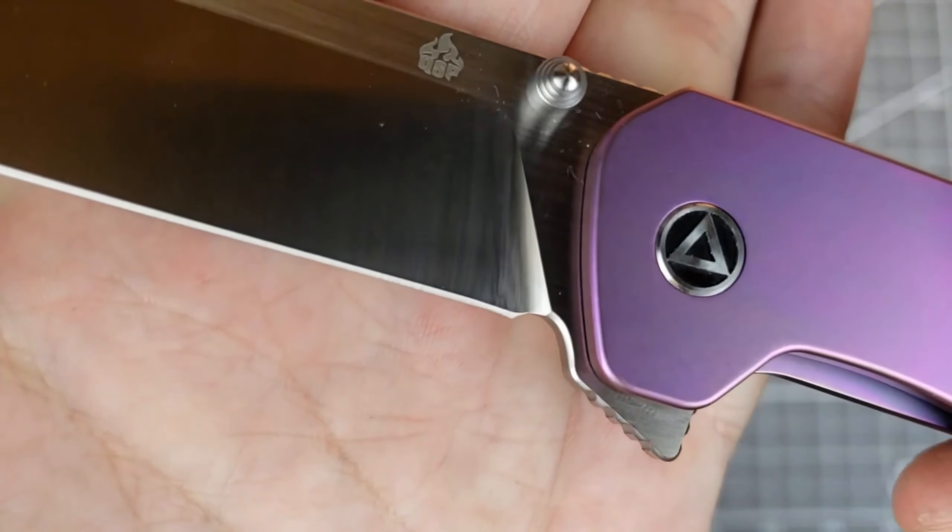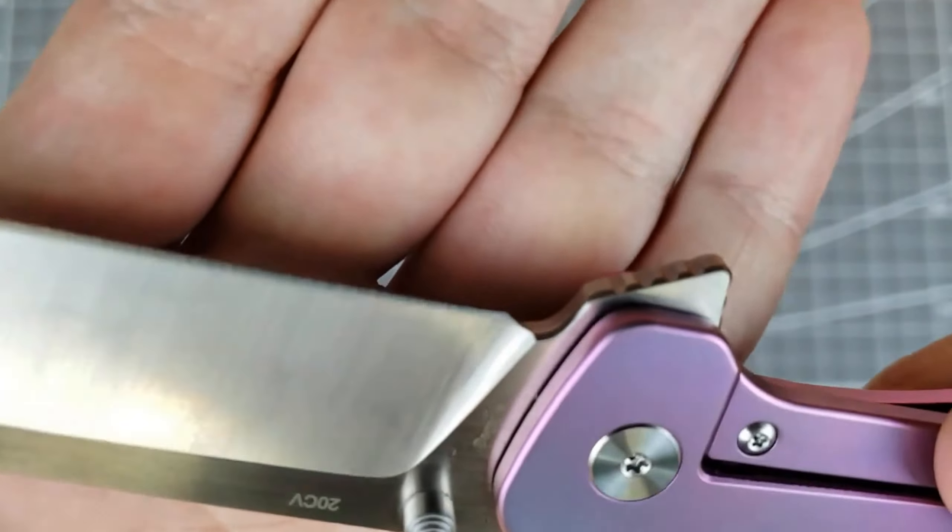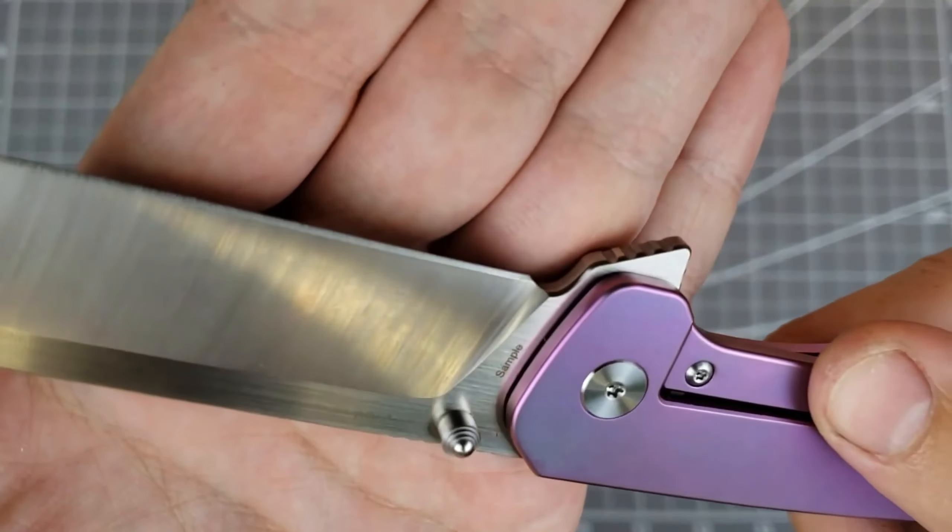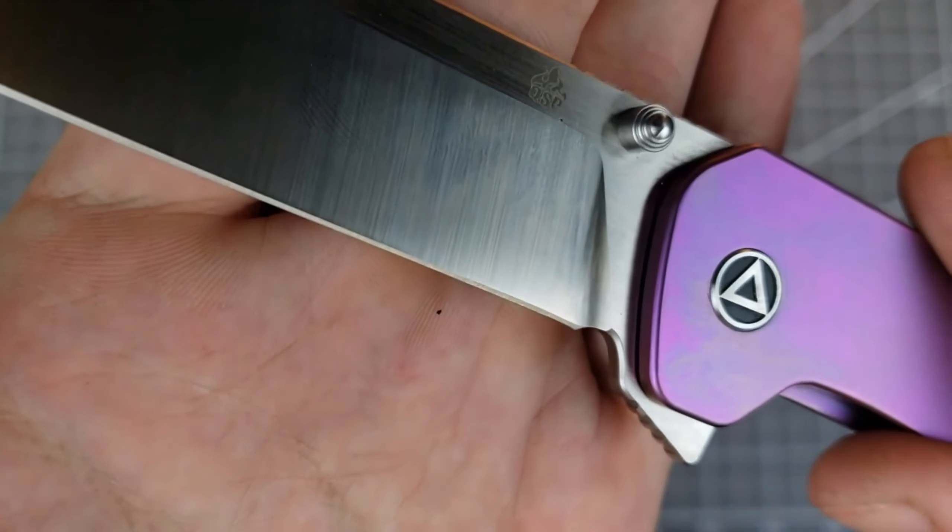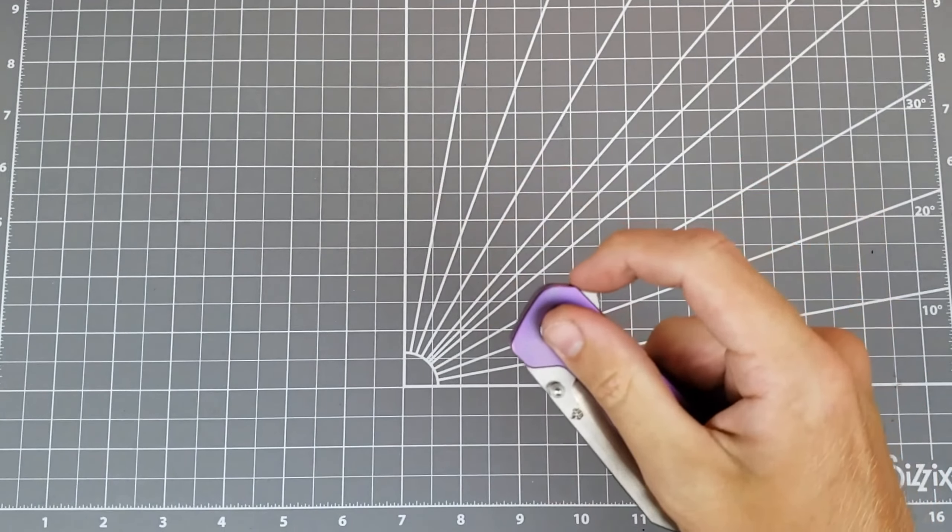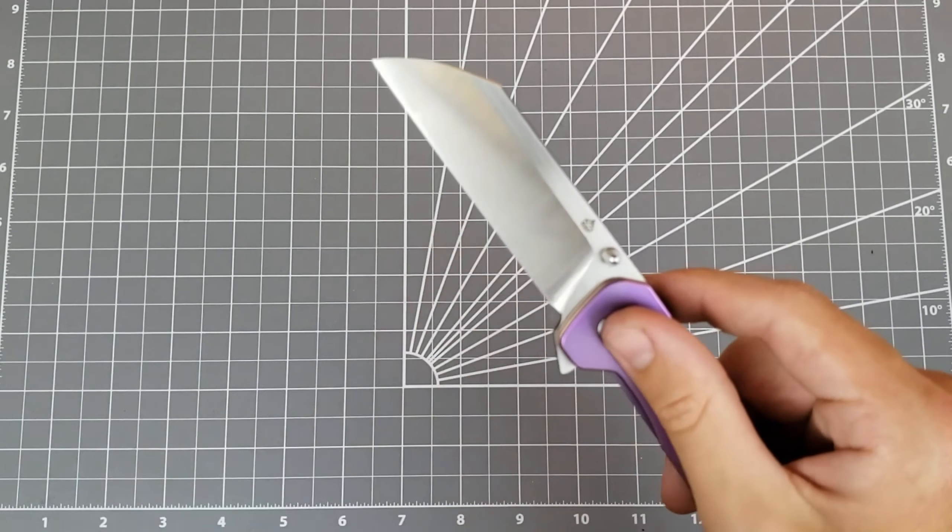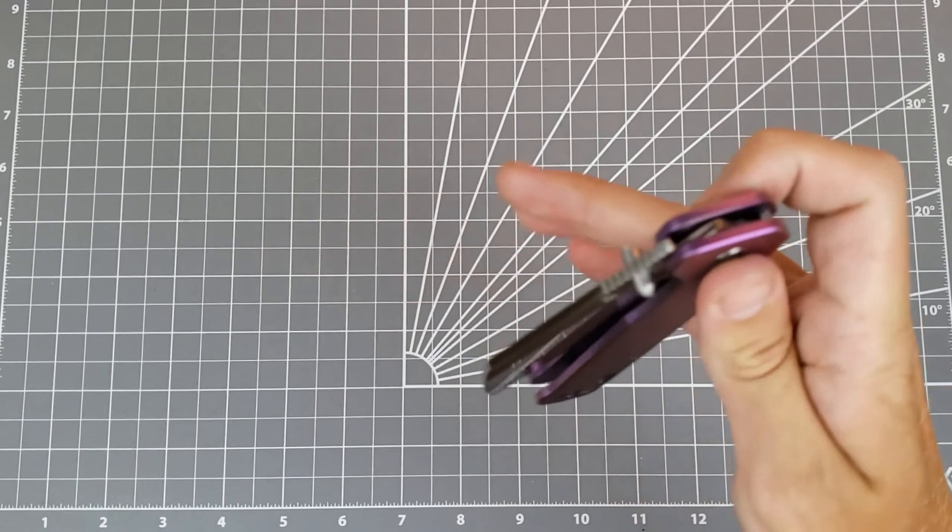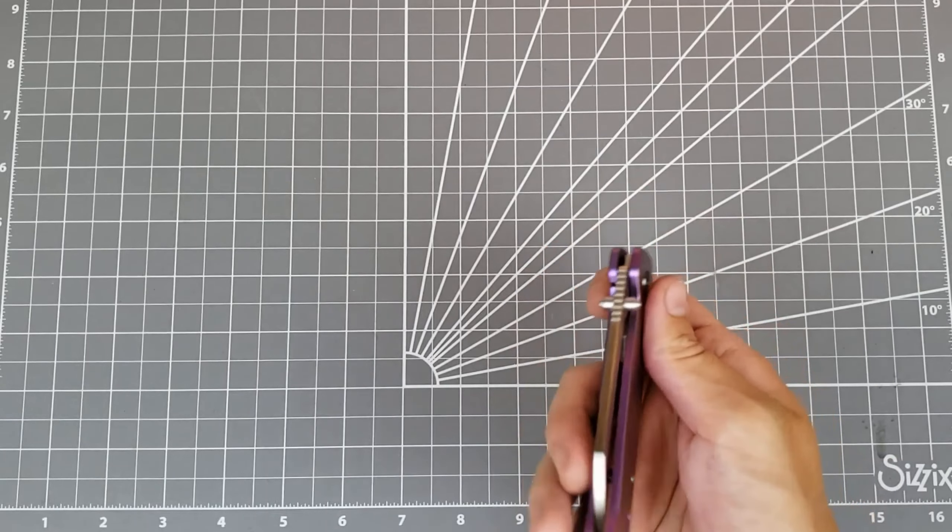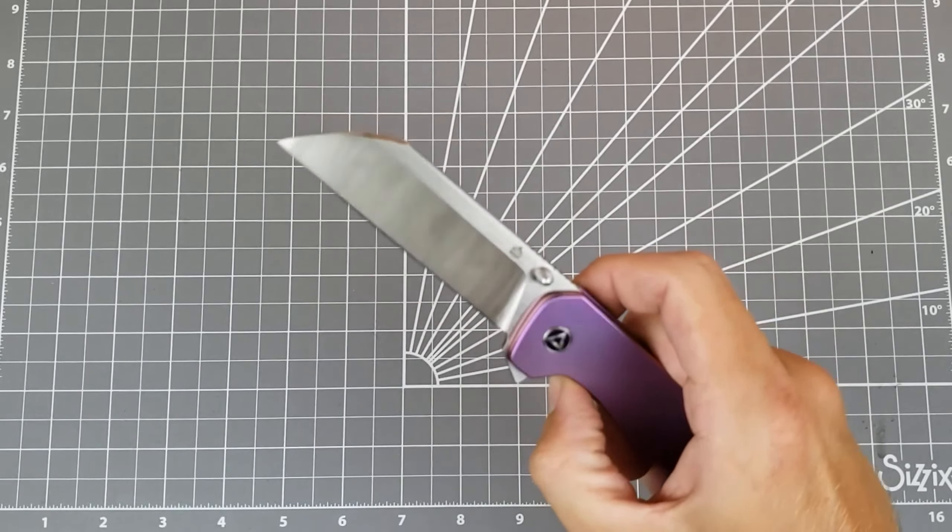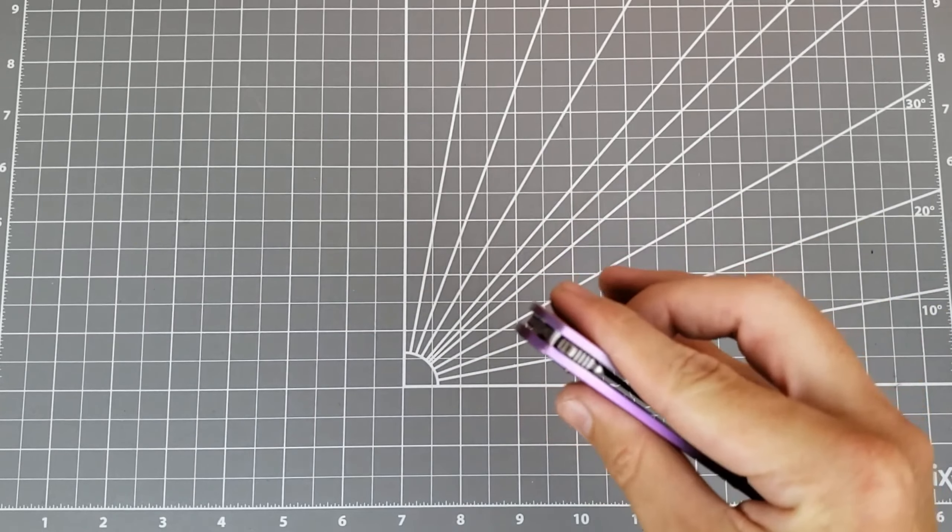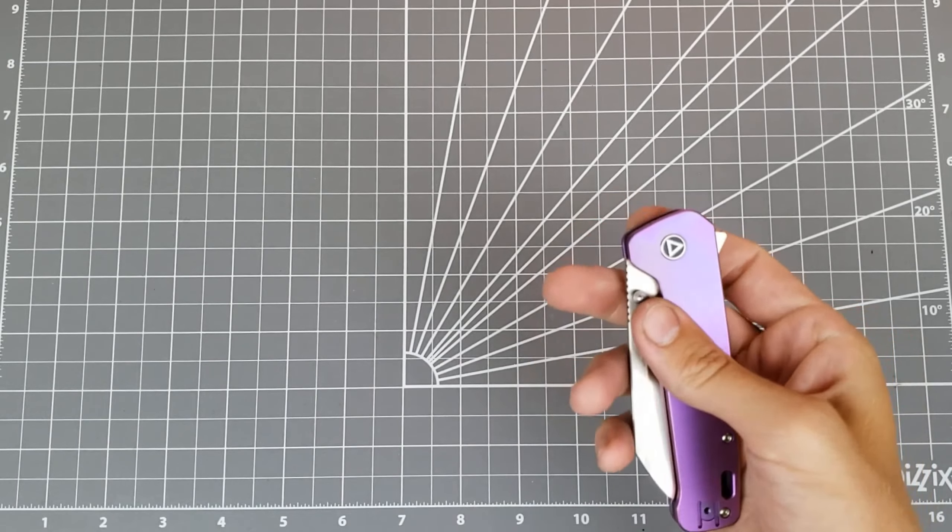Another thing I don't like is this sharpening choil, just like the regular penguin is too small. You can see how it does not clear the plunge grind. So even on this factory edge, you have some recurve in it. That's definitely annoying. Really wish they would just take that back and out another eighth of an inch each direction. That's what I did on both my penguins and definitely improves it both aesthetically and sharpening wise. But that's pretty easy modification to make yourself.